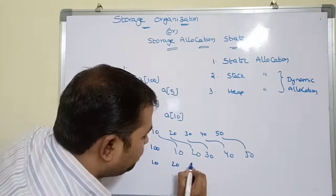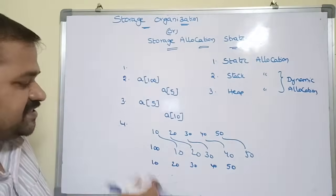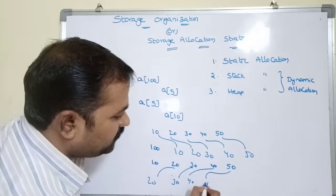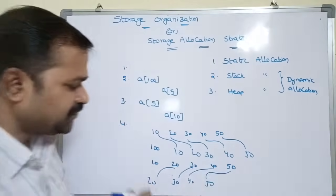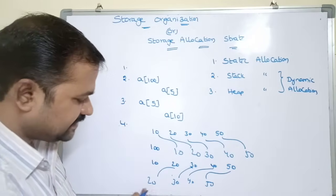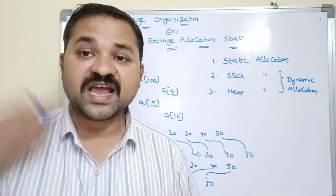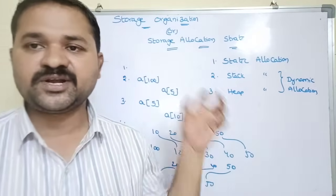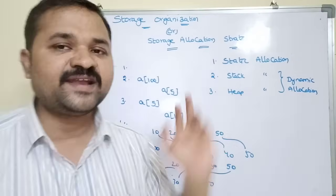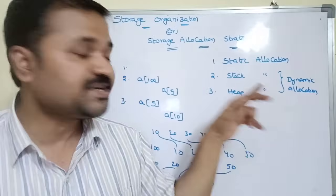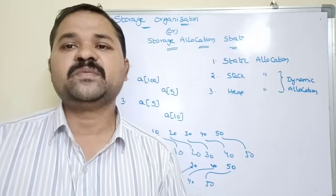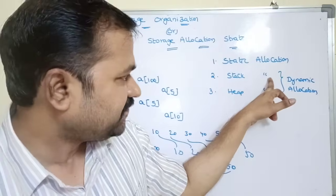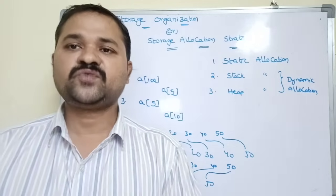For deletion, if we delete the first element from 5 elements, we must shift 20, 30, 40, and 50 each one position to the left — 4 shiftings. If the array has 1 lakh elements, 99,999 shiftings are needed. To overcome all these problems, we use dynamic allocation, where memory is allocated during runtime.